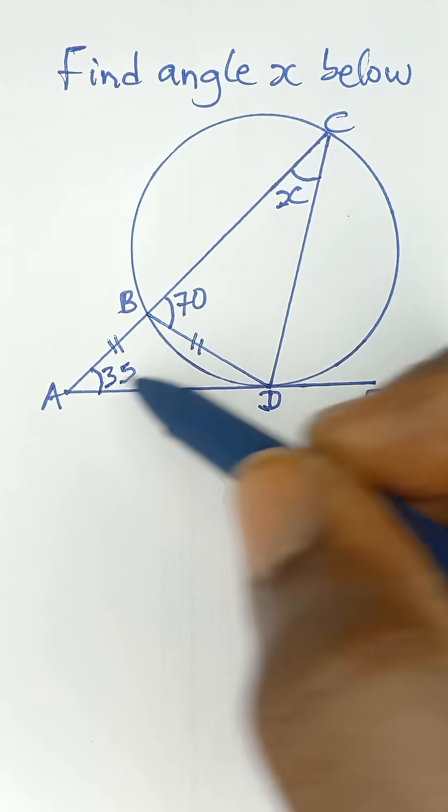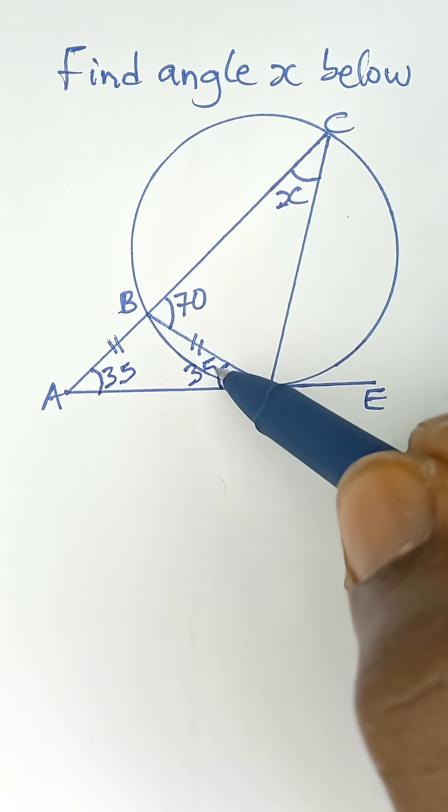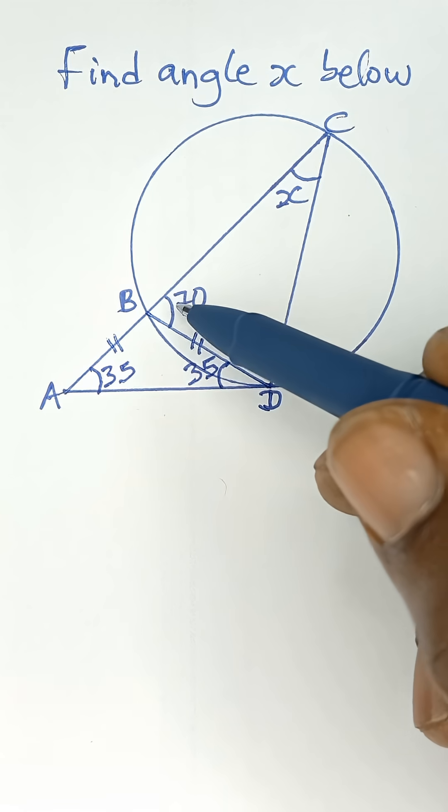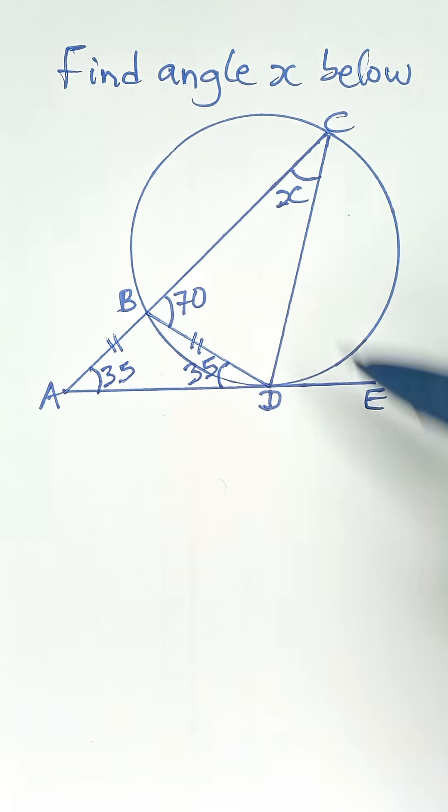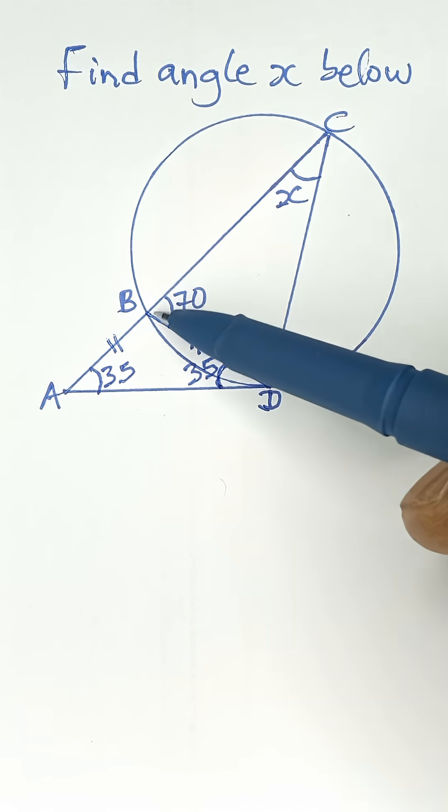Don't forget that this 35-degree angle is made by chord BD, because BD makes a 35-degree angle with the tangent AE.